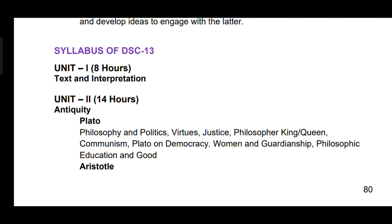Unit 2 is Antiquity, which is all about the ancient philosophers, particularly Plato and Aristotle. In Plato's work, you will dive into topics like philosophy and politics, virtues, justice, the idea of a philosopher king or queen, communism, democracy and the role of women and guardianship. In Aristotle's writings, concepts covered include man as a political being, the state and household, citizenship, justice, virtue and different types of regimes.